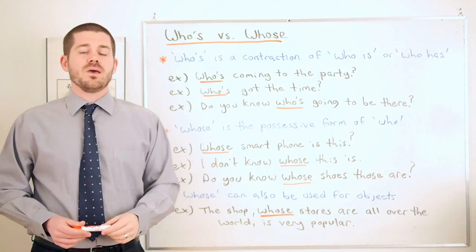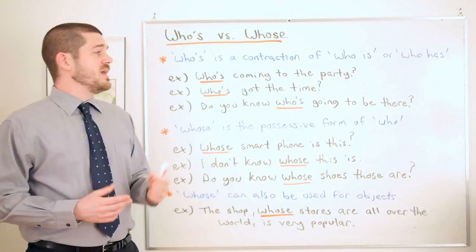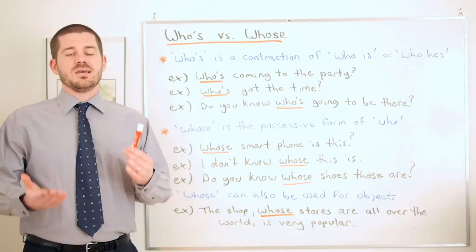Now the simple way to look at that is if we think this is in the present continuous, so we know when we use the present continuous we need be, which means this has to be who is coming to the party.